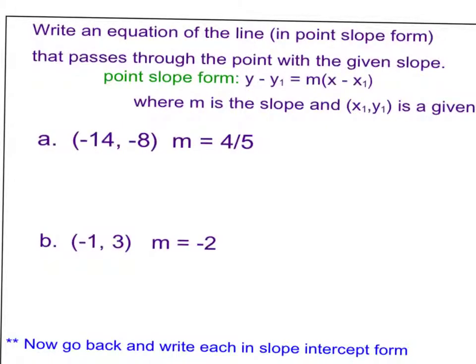So let's do some examples. Here, example A, we have a point, negative 14, negative 8, and the slope is 4 fifths.